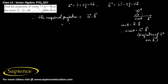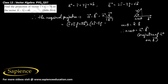The required projection equals a⃗ dot b̂, which can be written as a⃗ dot b⃗ divided by the magnitude of b⃗. Substituting, that is (î + 3ĵ + 7k̂) dot (2î - 3ĵ + 6k̂) divided by |b⃗|.